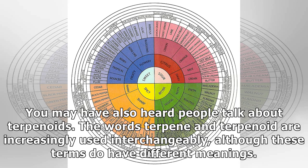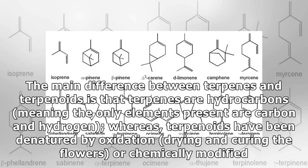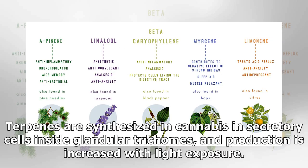The words terpene and terpenoid are increasingly used interchangeably, although these terms do have different meanings. The main difference is that terpenes are hydrocarbons — meaning the only elements present are carbon and hydrogen — whereas terpenoids have been denatured by oxidation, drying, and curing the flowers, or chemically modified.